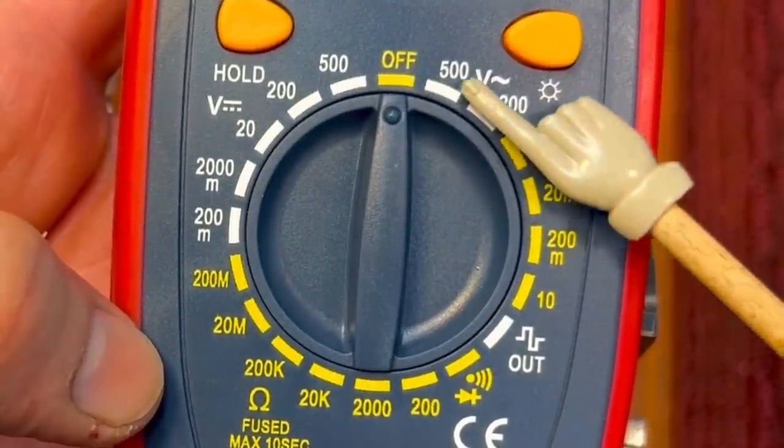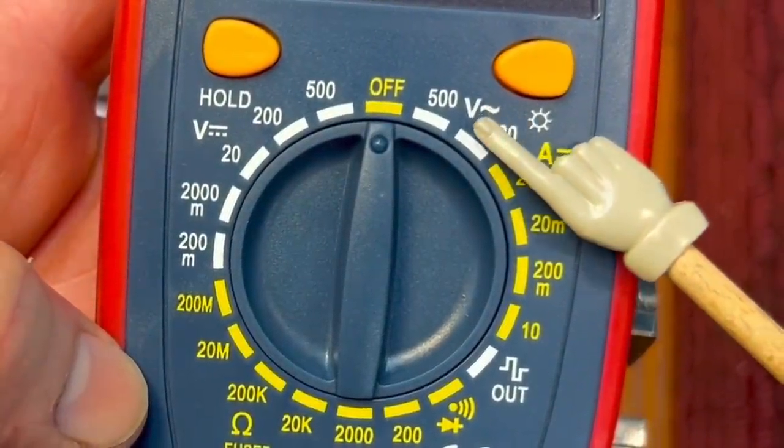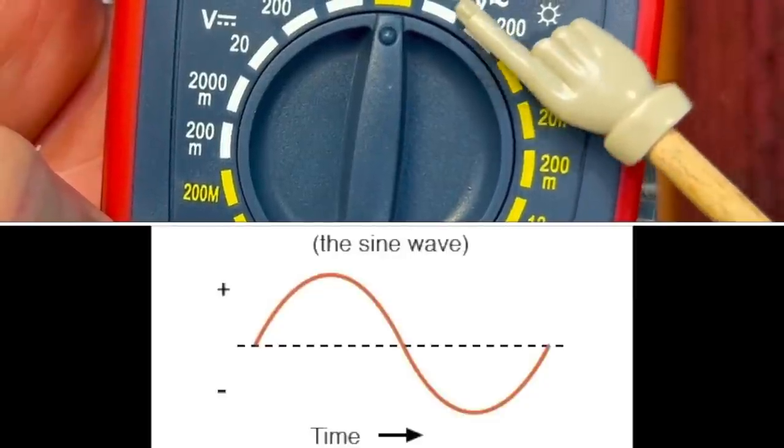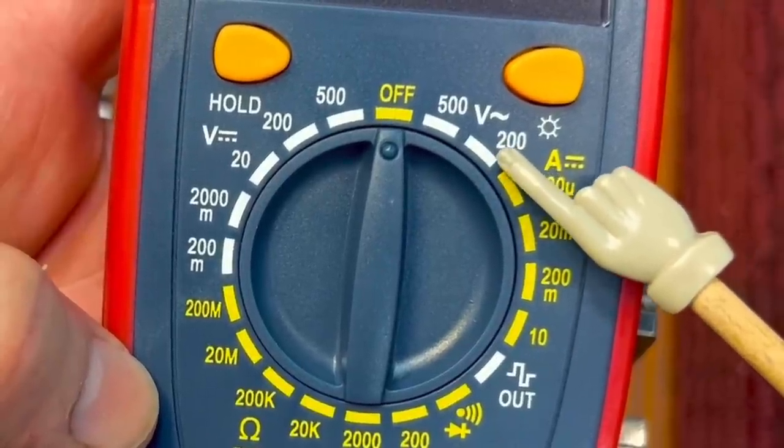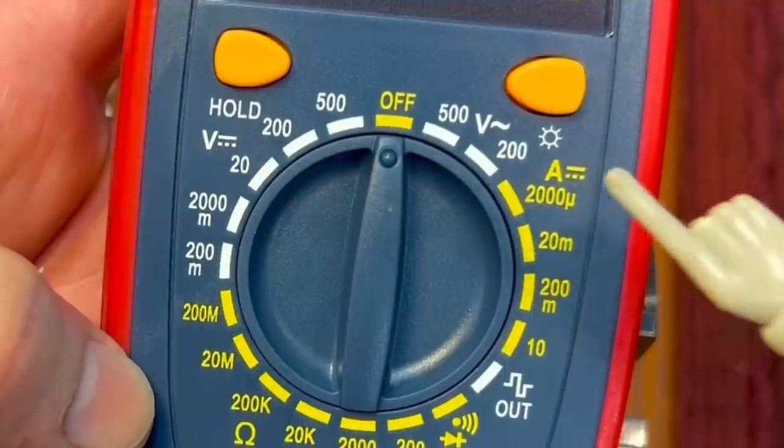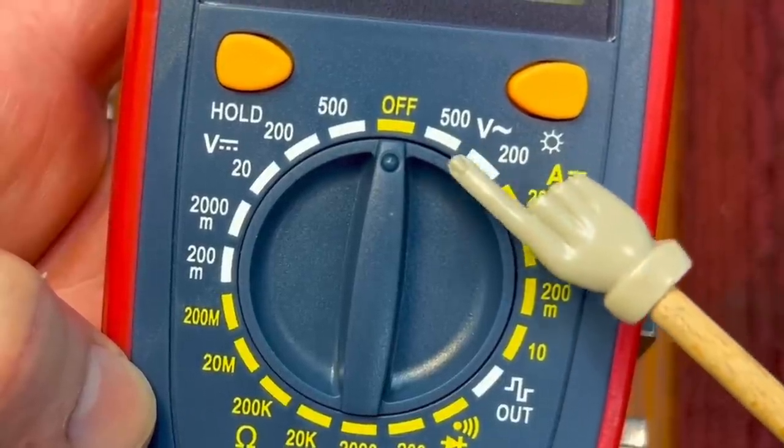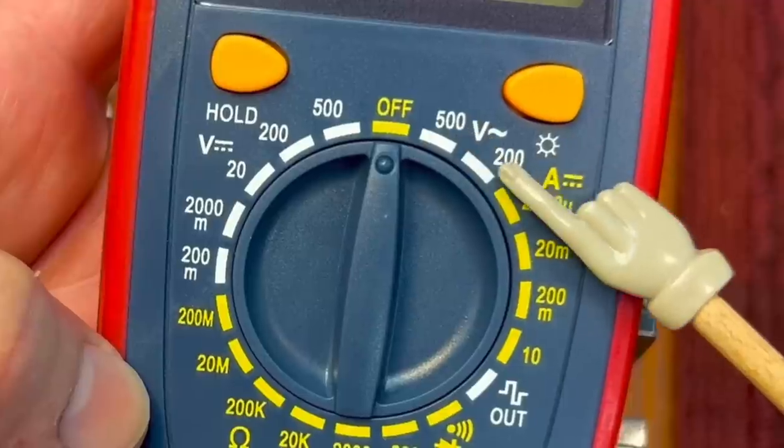And over here, on the upper right here, this is voltage and you see that little squiggling line. That's like a sine wave and this is for alternating current. So if you're going to check 200, like here in the United States, you want to check the voltage in your house, you would go to 200. In the UK, because it's 220, you would go to 500. You always go to the range higher than what you think you're going to be testing.